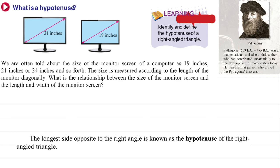Let's get to know who Pythagoras is. Pythagoras was born in 569 BC. He was a mathematician and also a philosopher who had contributed substantially to the development of mathematics today. He was the first person who proved the Pythagorean theorem. That is why the theorem was named after him.